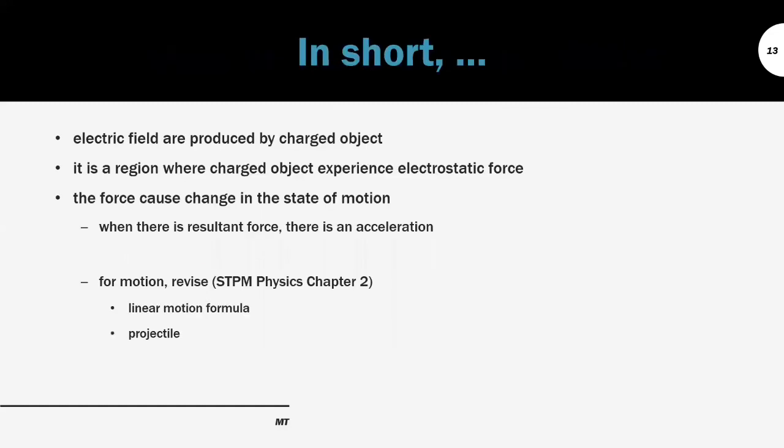In short, in this topic we have learned that electric fields are produced by charged objects — it's a region where charged objects experience electrostatic force. The force can cause a change in the state of motion based on Newton's first law of motion, and when there's a resultant force there's an acceleration. For the motion part, you can revise STPM Physics 2 about the linear motion formula and also projectile to further solve all equations related to motion due to the electric field. That's all for this video. Thank you.